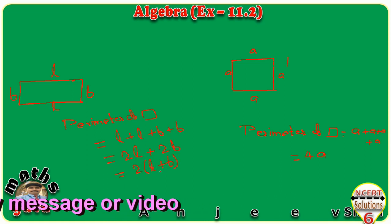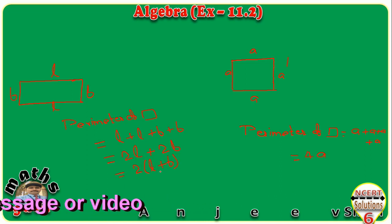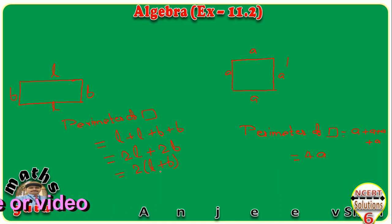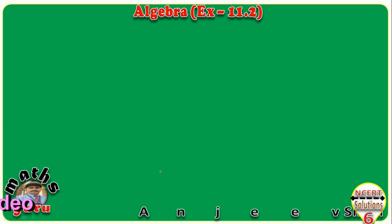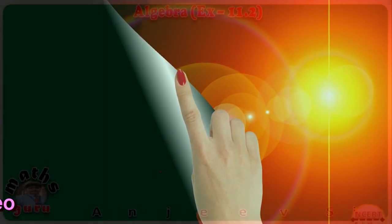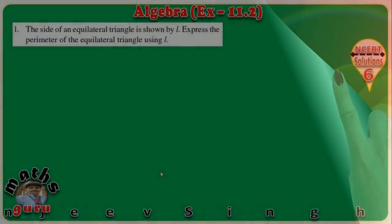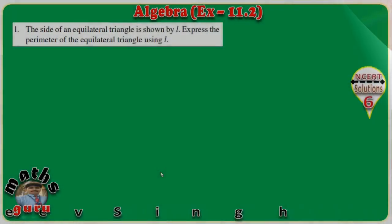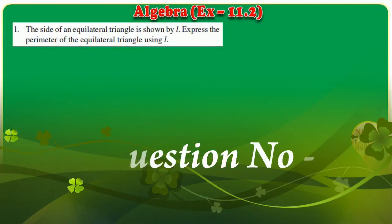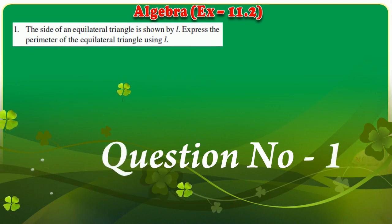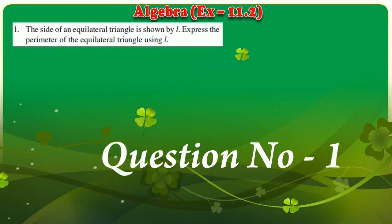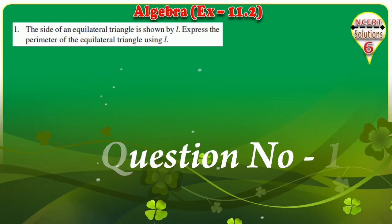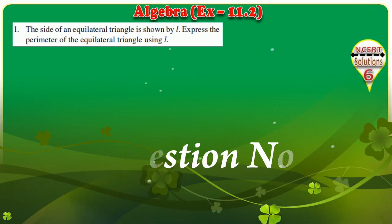In Exercise 11.2 you will have these types of questions and equations. The first question is: the side of an equilateral triangle is shown by L. Express the perimeter of the equilateral triangle using L.